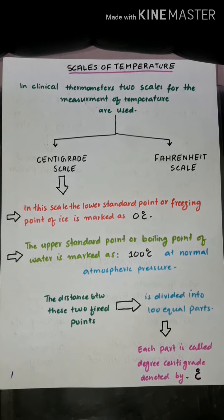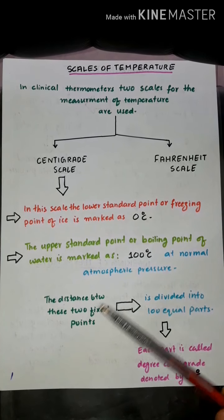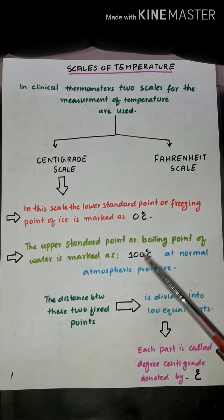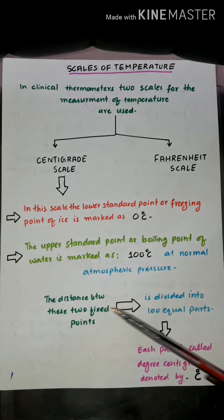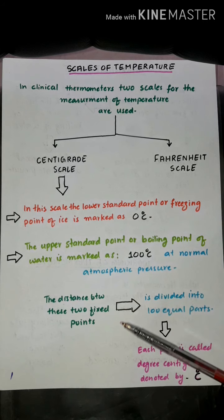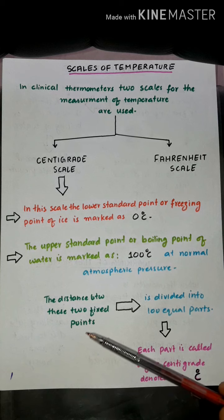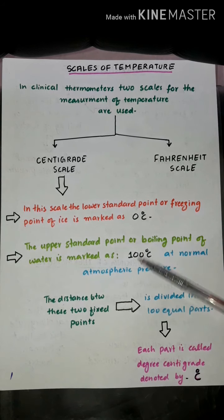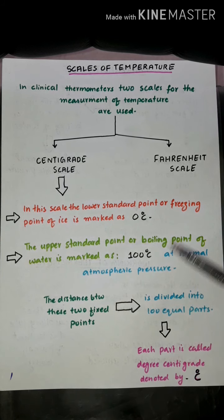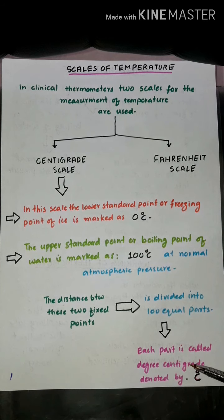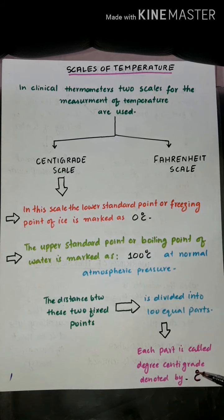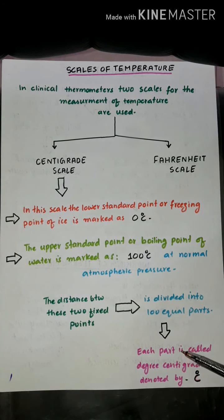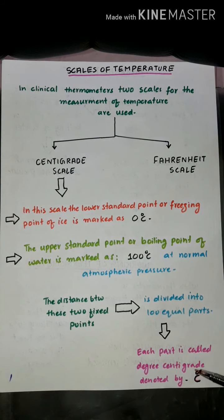The distance between these two standard fixed points, zero and 100, is divided into 100 equal parts. Each equal part is called a degree centigrade and is denoted by °C, where C stands for centigrade. So every equal division on this scale is called degree centigrade, denoted °C.